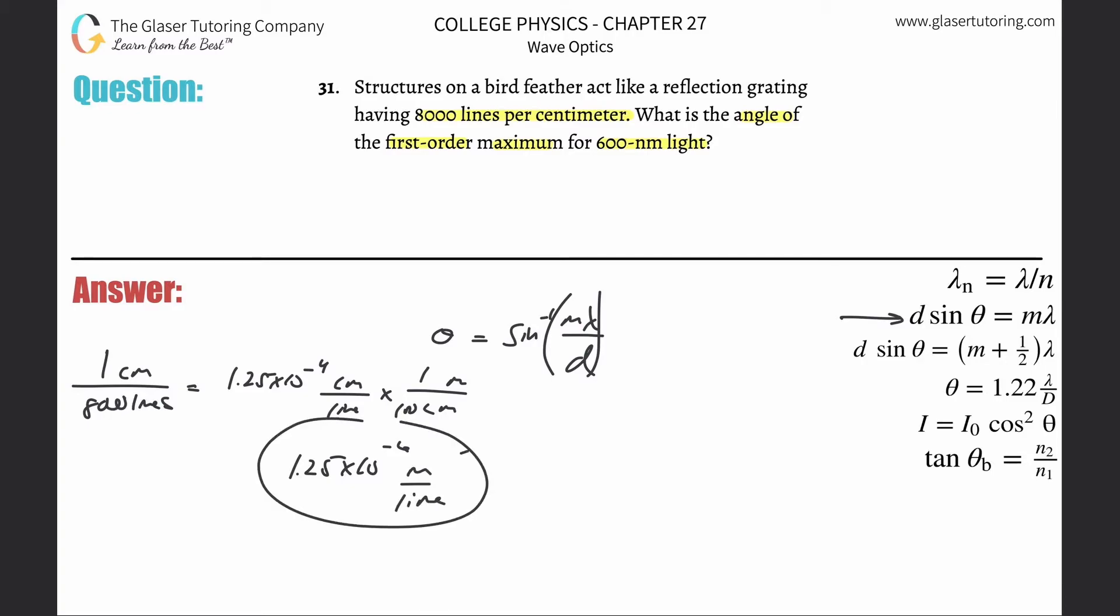Now, what you're going to do is you're going to take that, and that's your d value. So, let's move this on over a little bit, and let's start plugging it in. So, inverse sine of the first order max, so m is 1. The wavelength, they told us, was 600 nanometers. Convert that into meters. And then, simply just divide that now by that distance between the slits.